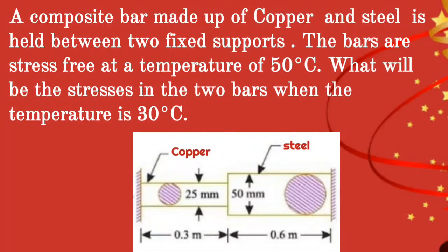Given question: a composite bar made up of copper and steel is held between two fixed supports. The bars are stress free at a temperature of 50 degrees Celsius. What will be the stresses in the two bars when the temperature is 30 degrees Celsius?